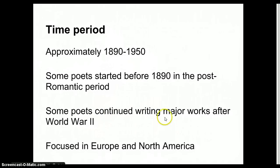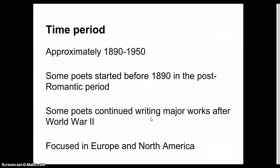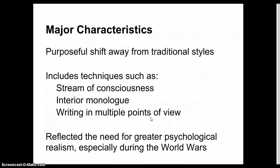Some poets continued writing after World War II. E.E. Cummings and T.S. Eliot were still writing after World War II, after 1950, but again are still considered major players in the modernist movement. The focus was in Europe and North America. This is a British lit class generally, and so we're going to focus in those areas.